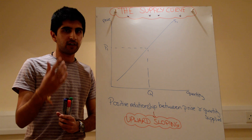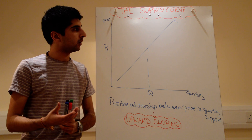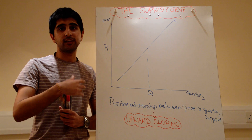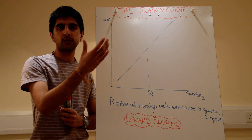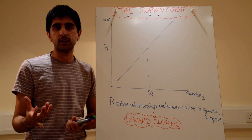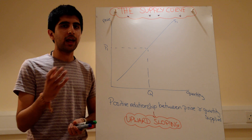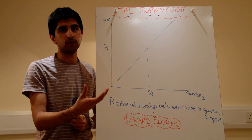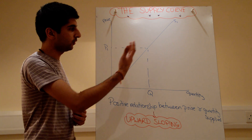The concept of willing and able is very important. Suppliers might be willing to sell thousands and thousands of units, but if they only have 100 units, then they're not able. So they need to be willing and able to constitute supply.